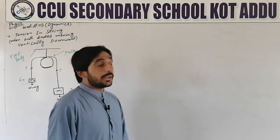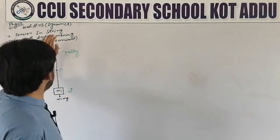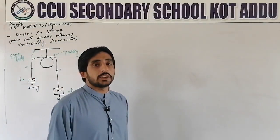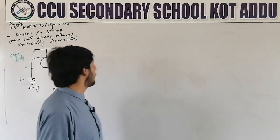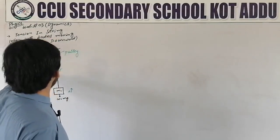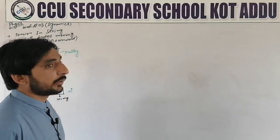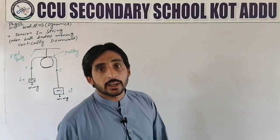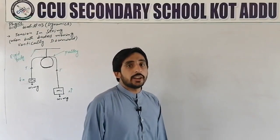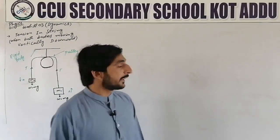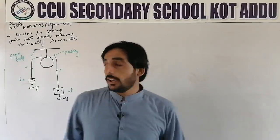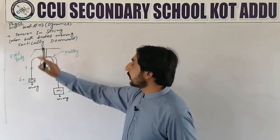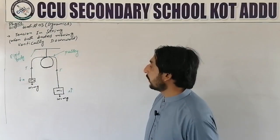Our topic is tension in a string when both bodies are moving vertically downward. We have two bodies connected via a string. We have to attach a pulley, and we have two masses attached to it — one is M1 and one is M2.